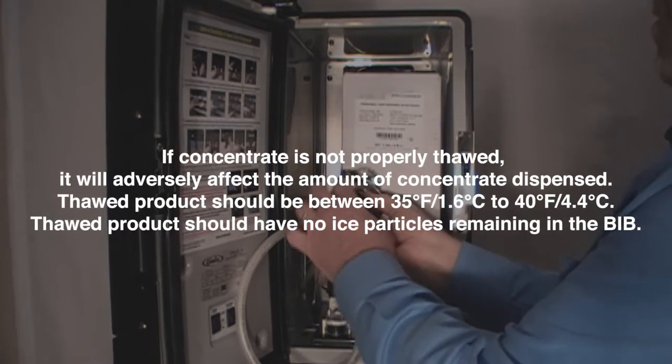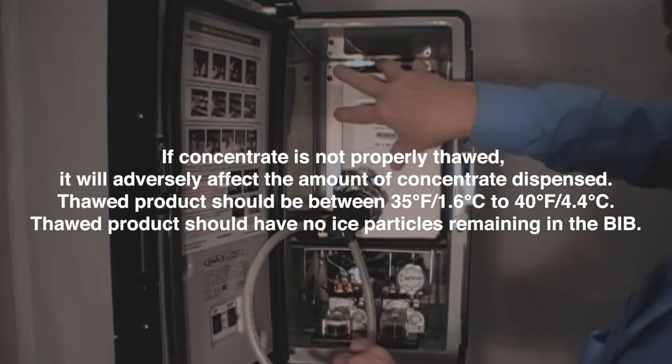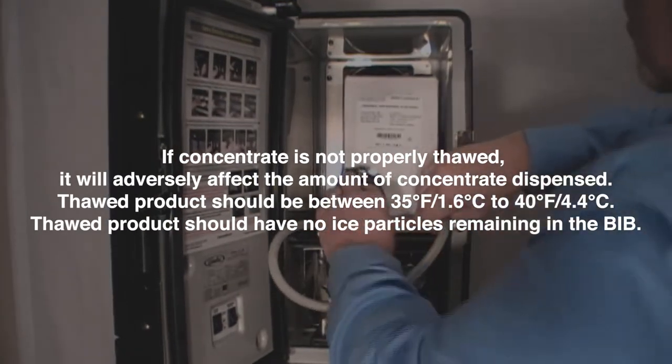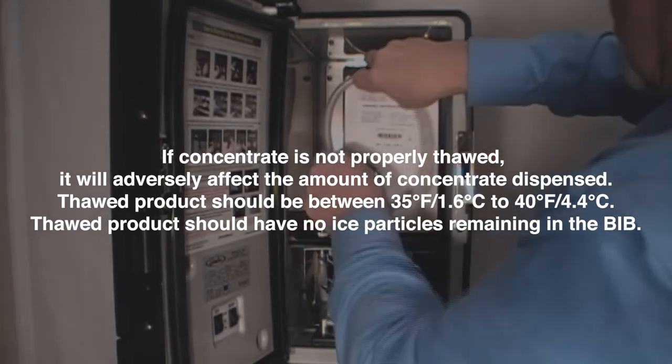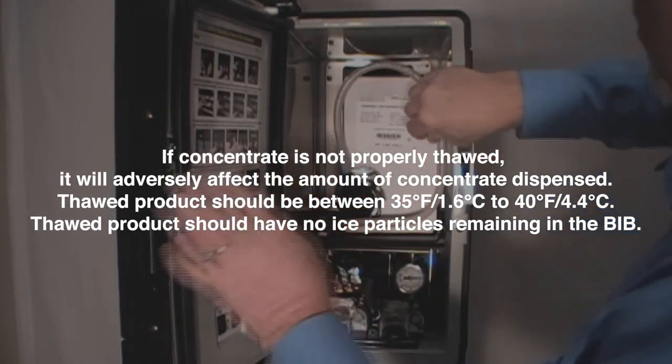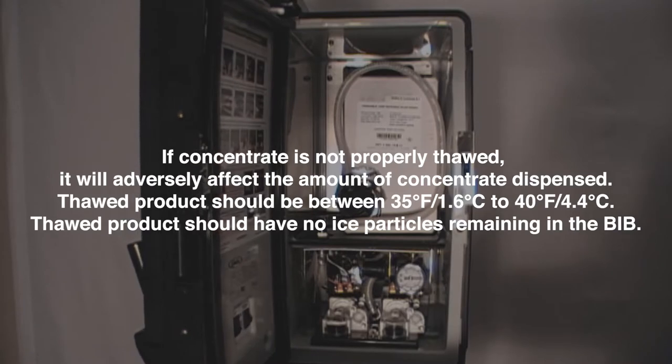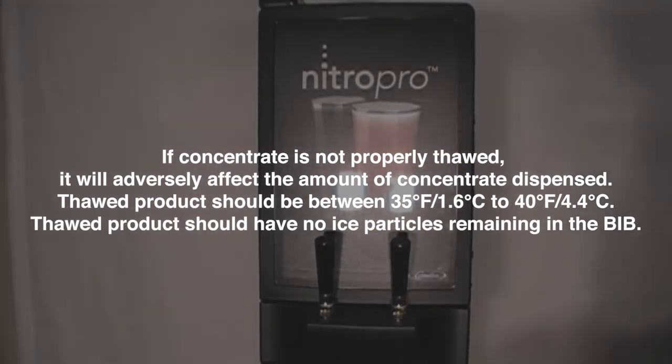If concentrate is not properly thawed, it will adversely affect the amount of concentrate dispensed. Thawed product should be between 35 degrees Fahrenheit, 1.6 degrees Celsius to 40 degrees Fahrenheit, 4.4 degrees Celsius. Thawed product should have no ice particles remaining in the BIB.